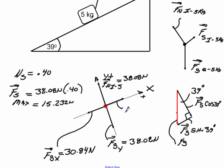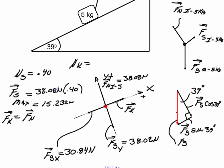I would have to calculate the kinetic friction. I would need to know mu_k, and by definition the kinetic friction is going to equal the normal force — in this case 38.08 Newtons — times mu_k. That would be my kinetic friction.